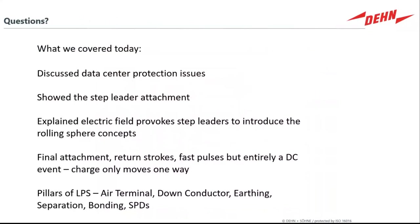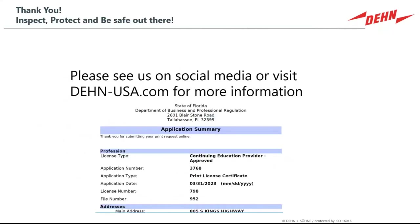In summary, we covered data center protection issues, the science of lightning distribution, how that influences the placement of air terminals around a structure, and how to design air terminal, down conductor, and earthing systems. We covered separation calculations, bonding of SPDs, and electrical systems around a structure. Please visit us on social media and at dane.com for more information. If you need a continuing education certificate, please let us know.